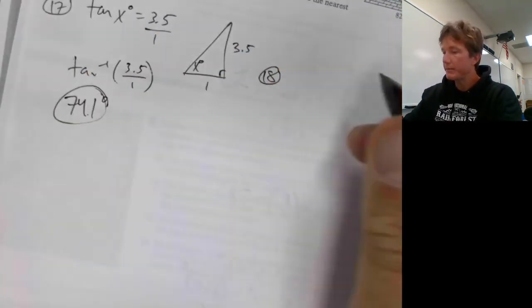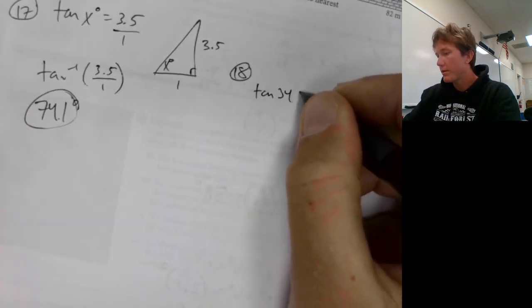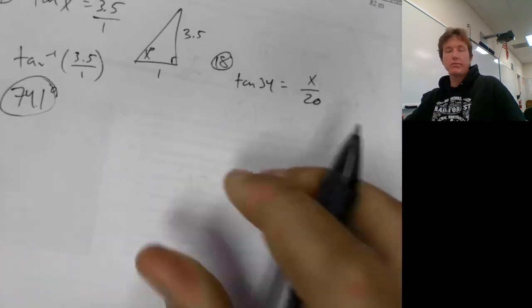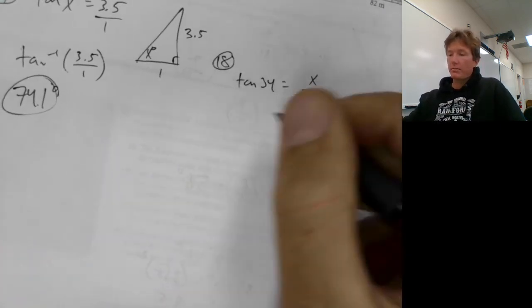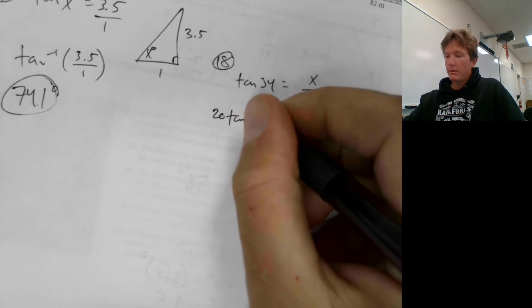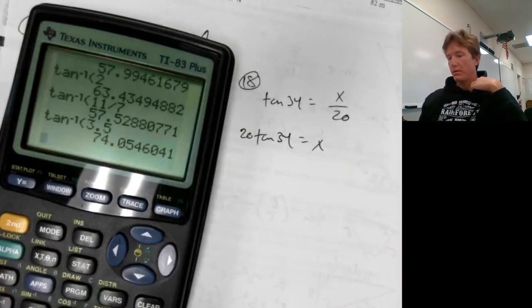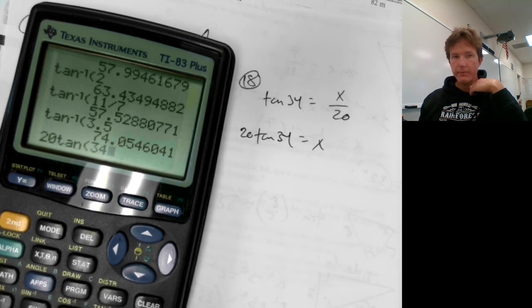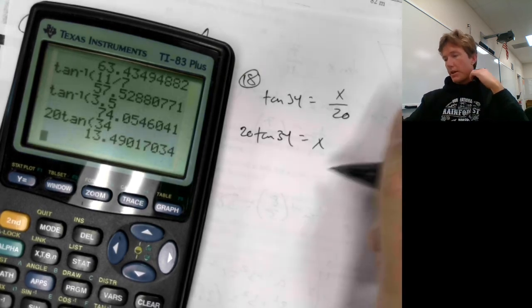Number 18: tangent of 34 equals X over 20. I'm solving for X, so I'll multiply by 20 to get X. So 20 times tangent of 34 is 13.5.